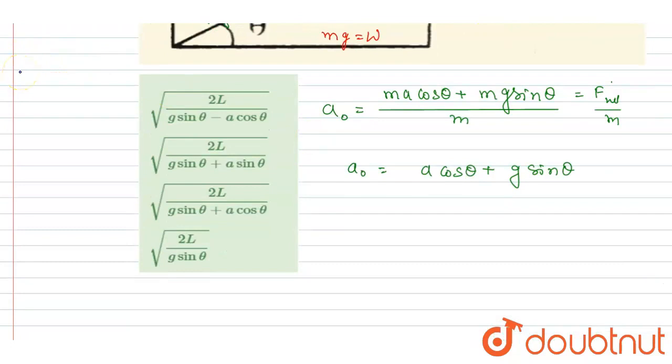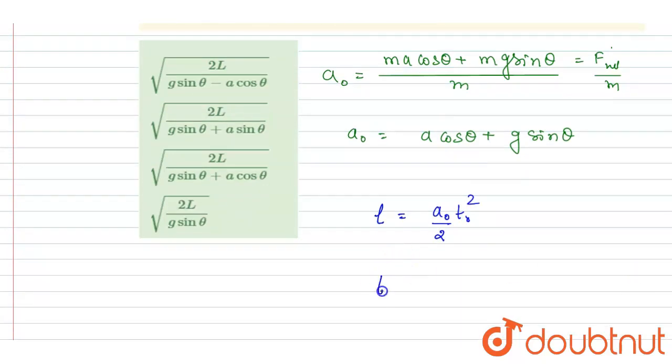...got the acceleration with respect to the frame, and with respect to the frame, I want this block to move l distance. So I will write this equation. Let's say it takes t naught time to travel this distance. From here, I will get t naught equals to under root 2l upon...